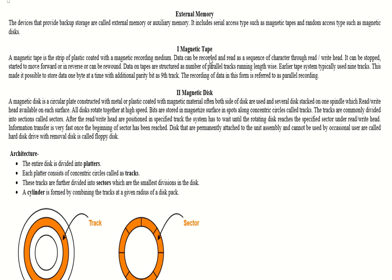First of all, what is magnetic tape? Magnetic tape is a strip of plastic coated with a magnetic recording medium. Data can be recorded and read as a sequence of characters using a read-write head. It can stop, start, move forward, move in reverse, or be rewound.